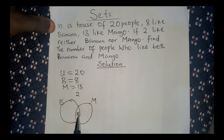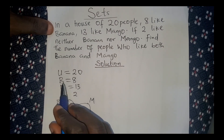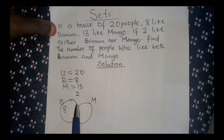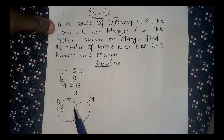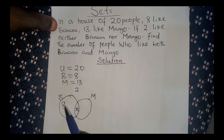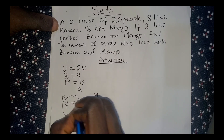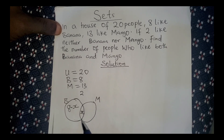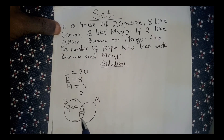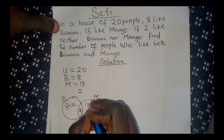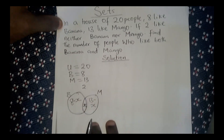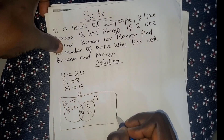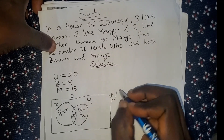People that like both banana and mango — let's represent that intersection as x. Now, people that like banana are 8, but since we've cut out the x part from banana, we remove x from it, which gives us 8 minus x. For mango we have 13, but since we've cut out this part represented as x, that would be 13 minus x.